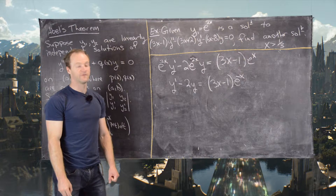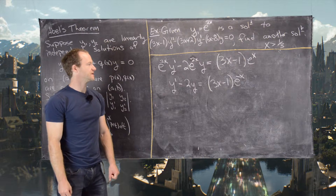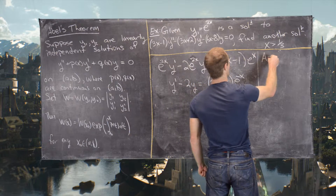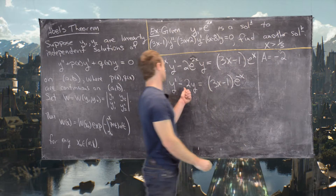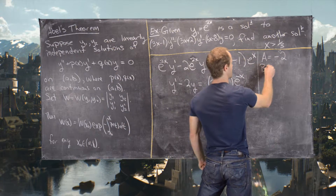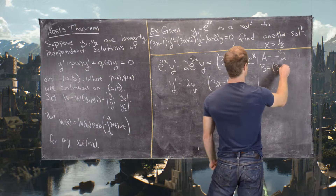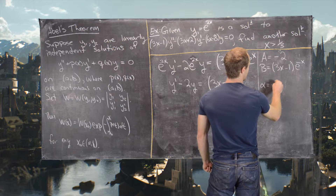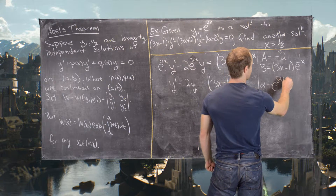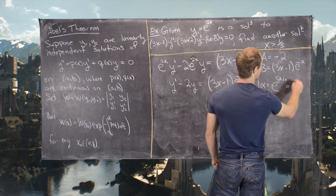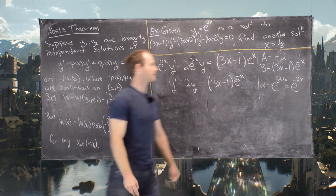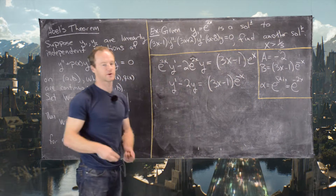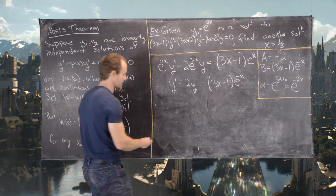We identify the parts for the first-order linear solution formula: a(x) = −2, b(x) = (3x − 1)e^{−x}, and the integrating factor α = e^{∫a dx} = e^{−2x}.